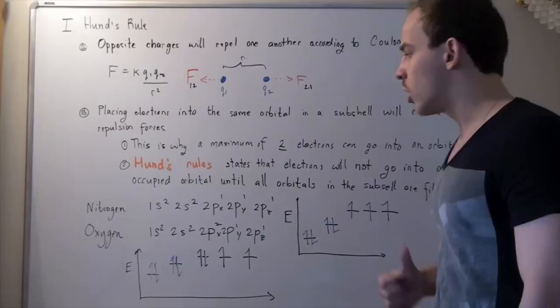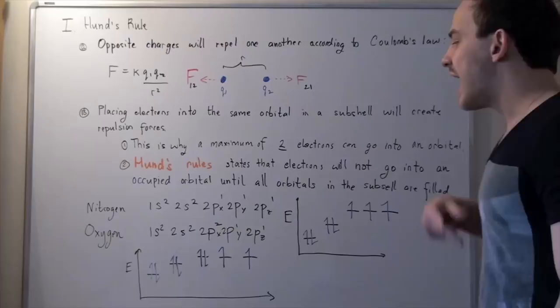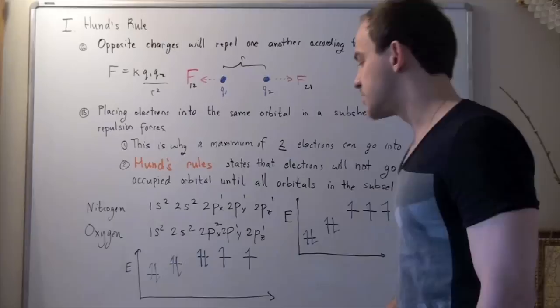Now, let's look at Hund's rule, the graphic representation for Hund's rule for oxygen. So, we start by drawing the same bars. And now, we start filling our orbitals.